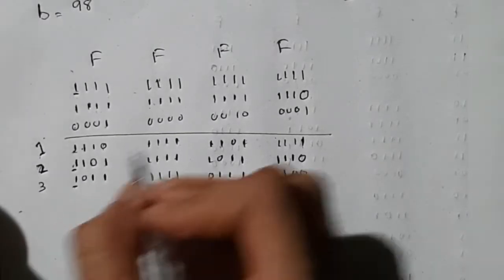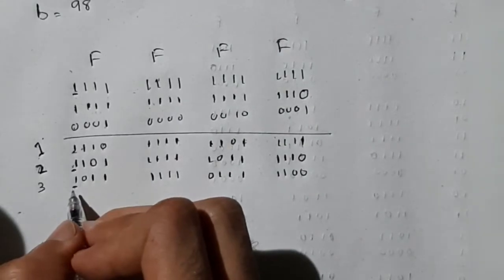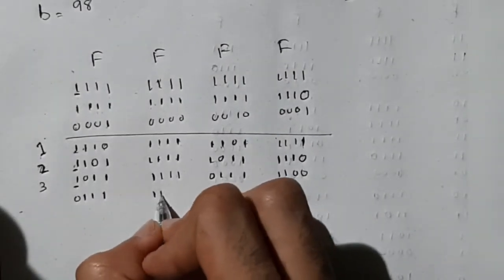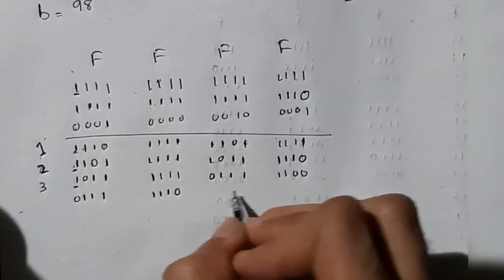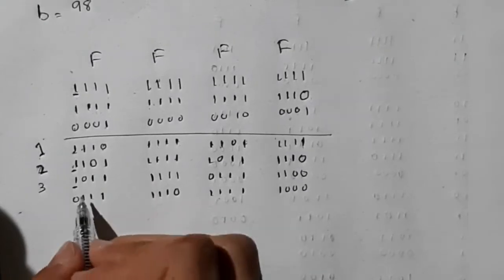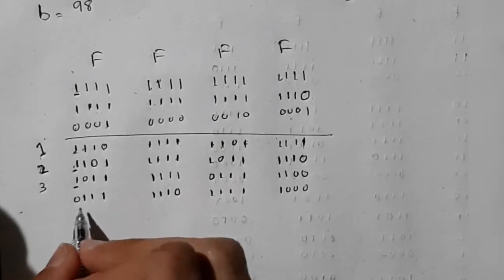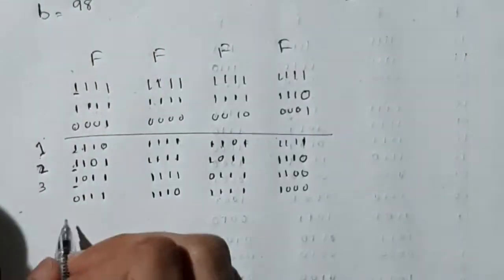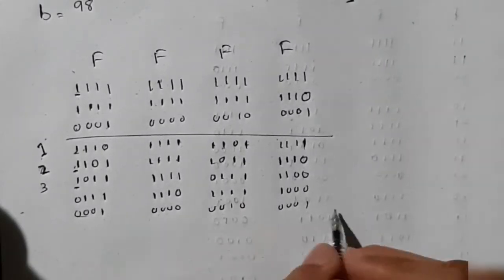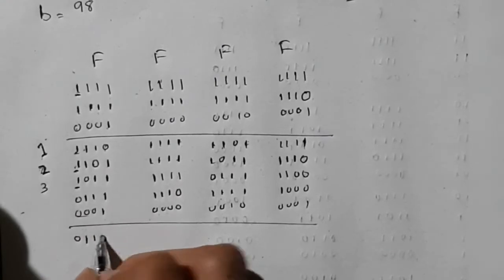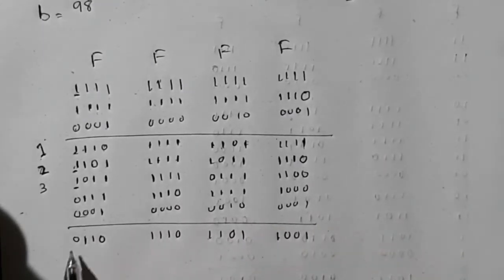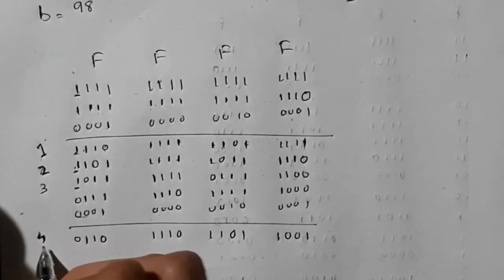After the third iteration, comparing the next bit: it's 0 and 1 — they are different. So we first left shift, then we also do XOR. We write 1021 in binary below and perform the XOR operation. We get the result, and this completes the fourth iteration. We continue this process until we have processed all eight bits.